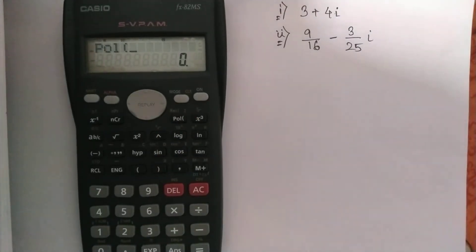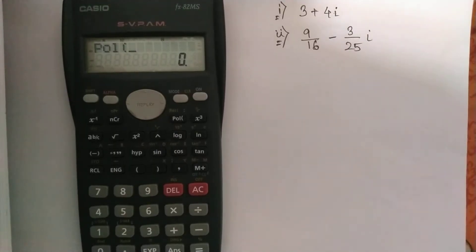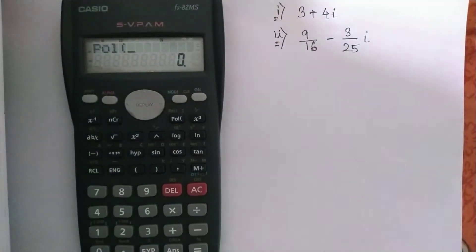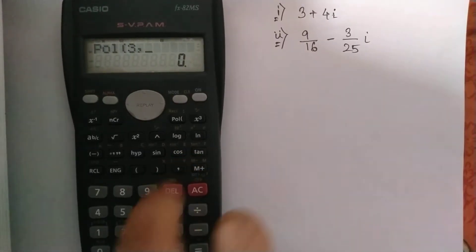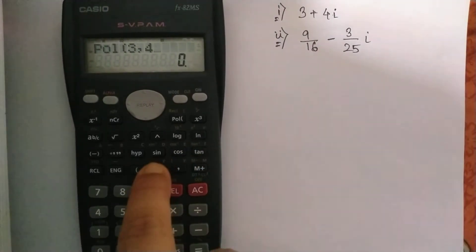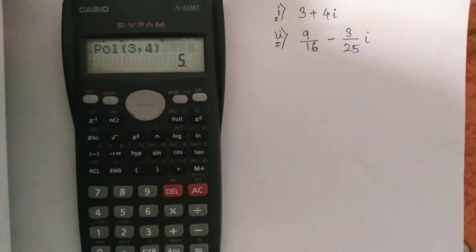Let us find this one first: 3 plus 4i. So press 3, and here you can see there is a comma, so you have to press that comma, then 4, and close the bracket. If you press enter, you will get 5, which is actually the modulus.